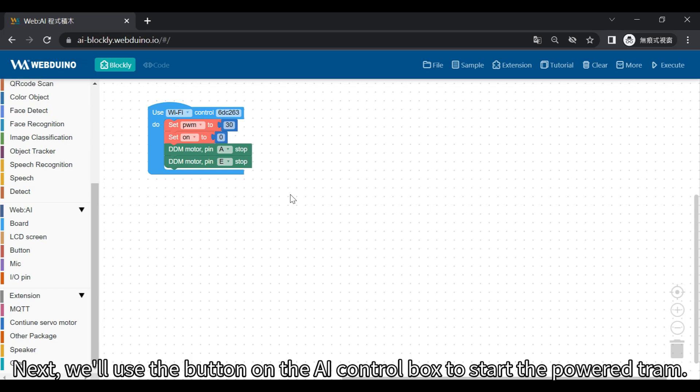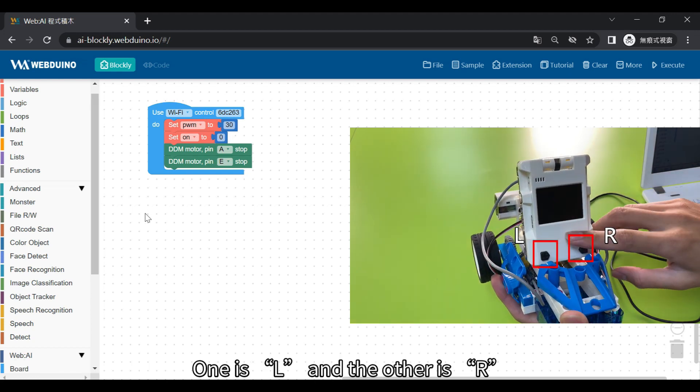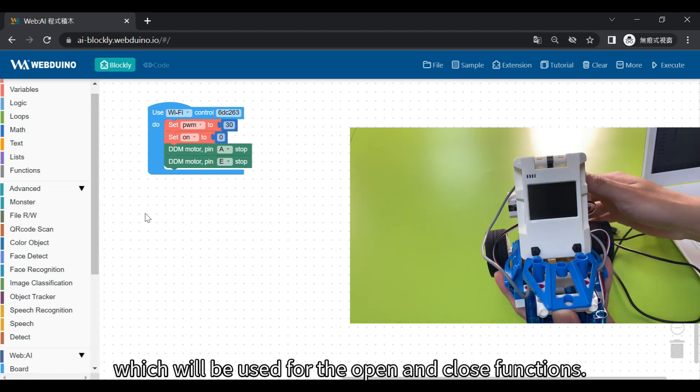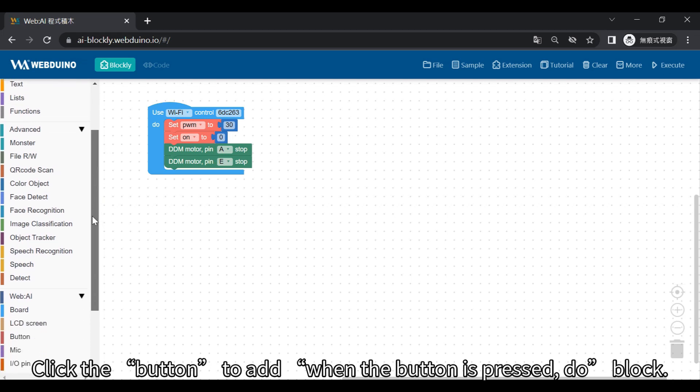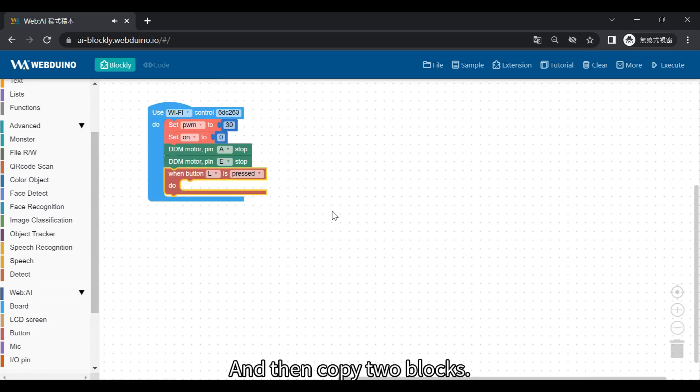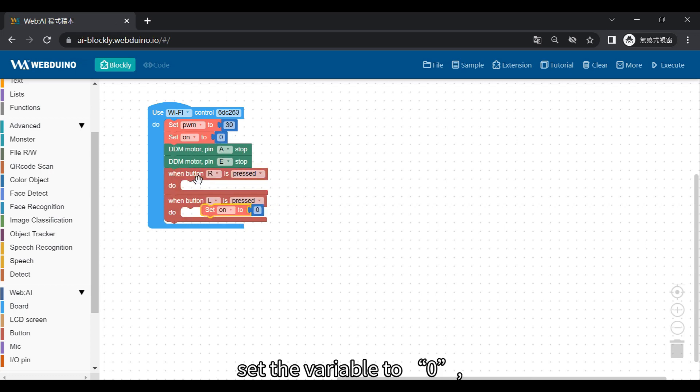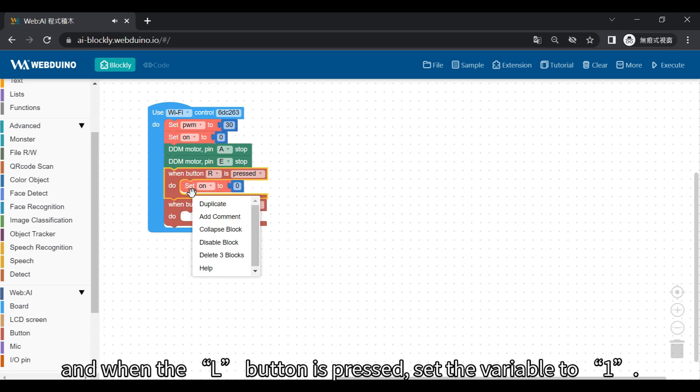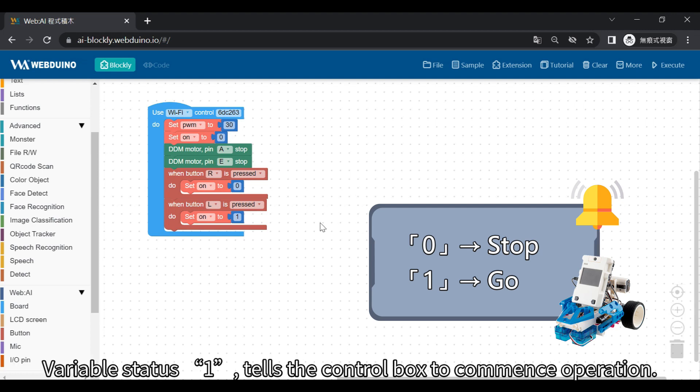Next, we'll use the button on the AI control box to start the powered tram. One is L and the other is R, which will be used for the open and close functions. Click the button to add when the button is pressed, do block. And then copy two blocks. Now, when the R button is pressed, set the variable to 0. And when the L button is pressed, set the variable to 1. The R button is configured to stop, and the variable 0 means stop. Variable status 1 tells the control box to commence operation.